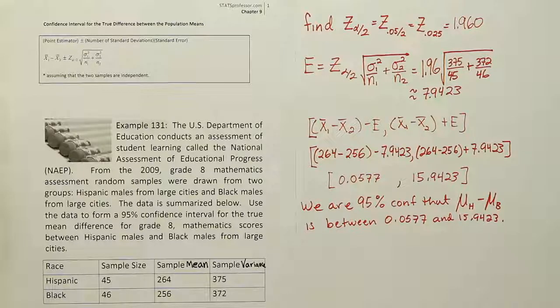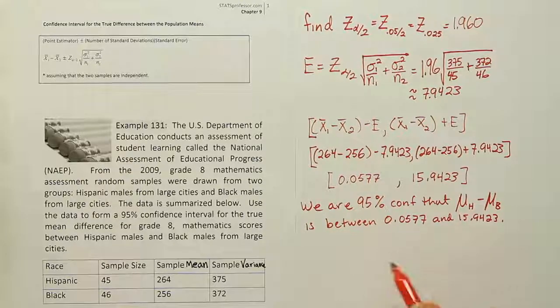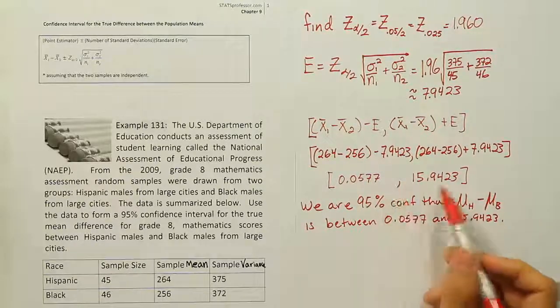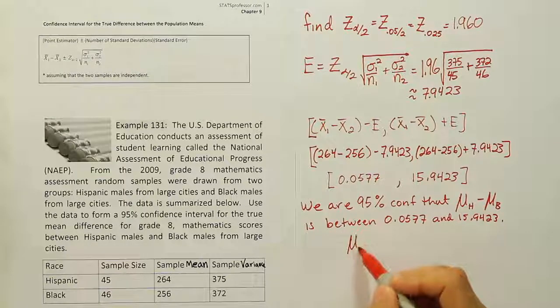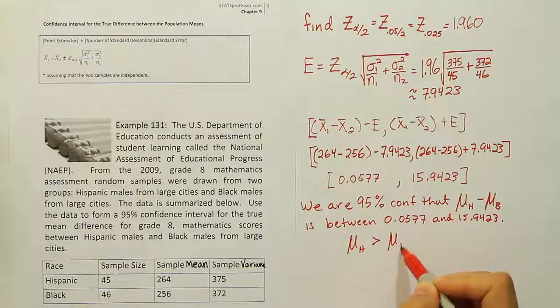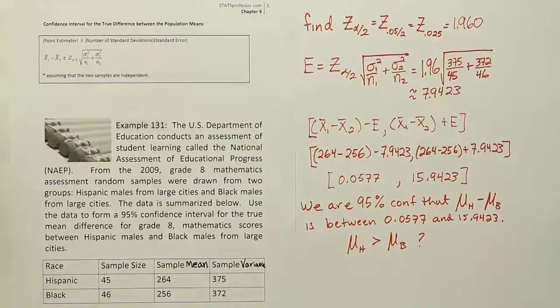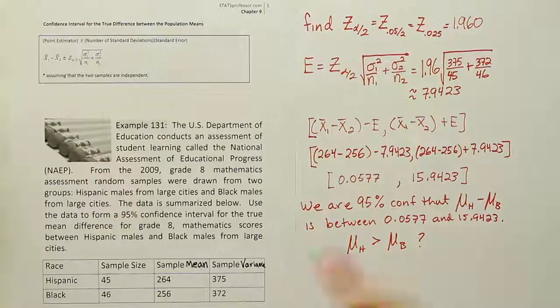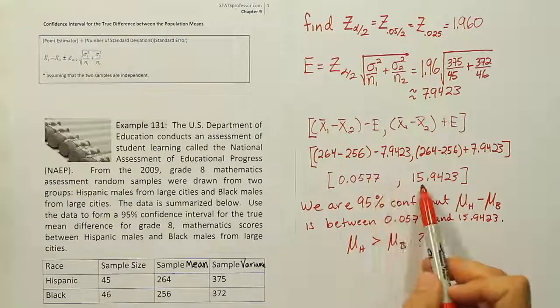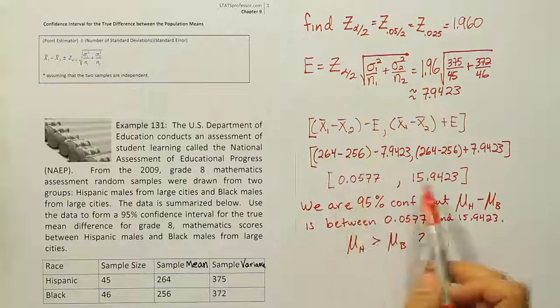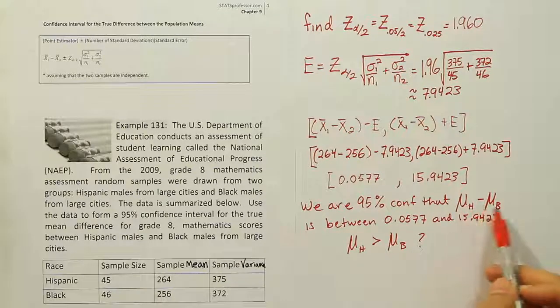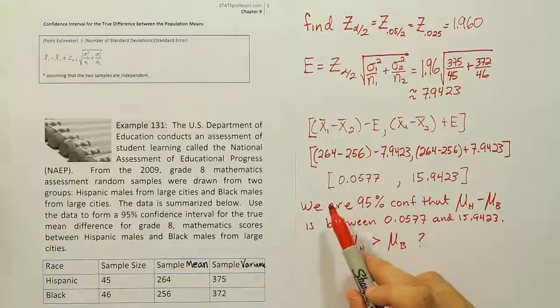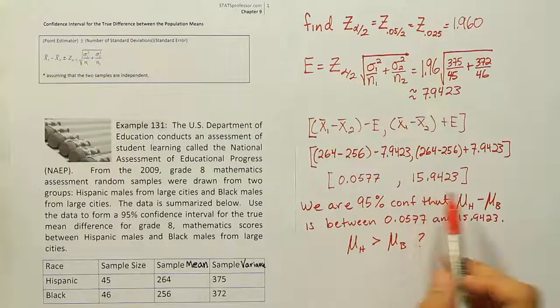Now let's do some more basic interpretation because a lot of times this sentence that we've written out becomes so routine that we don't even think about what it means. So what we're saying is that the true mean difference is inside of here. And what do we want to say about that difference? Are we going to say then that the mean for Hispanic males is greater than the mean for black males? That's the question. Can we affirm that or say that here? It seems like perhaps we can based on 95% confidence because the interval here is completely positive.